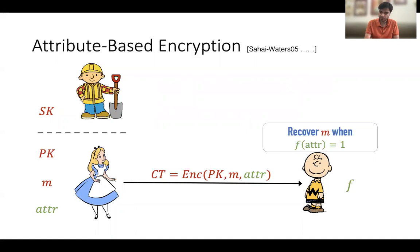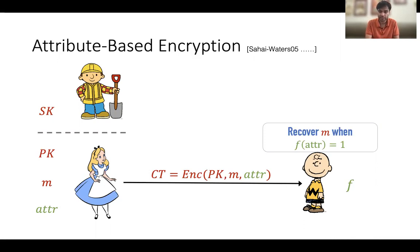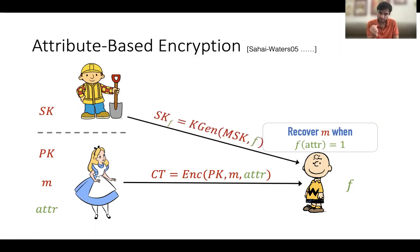So Alice creates this particular ciphertext and now there's a third party Charlie. Charlie wants to recover this message m whenever its policy f satisfies the underlying attribute. So if f(attribute) equals 1, it wants to recover the message m. One way to solve this problem is Charlie can simply send the ciphertext over to Bob and prove that it is authorized to decrypt it. And Bob will decrypt the ciphertext and give back Charlie the encrypted message if Charlie satisfies the attributes.